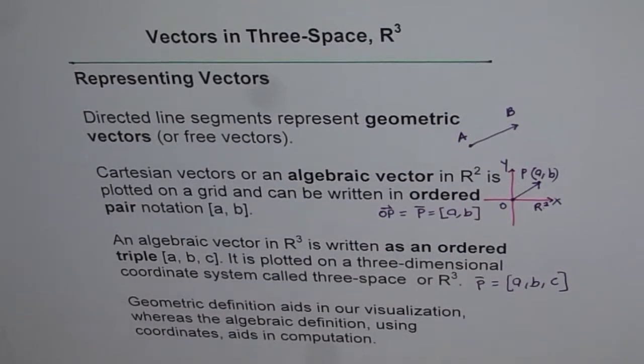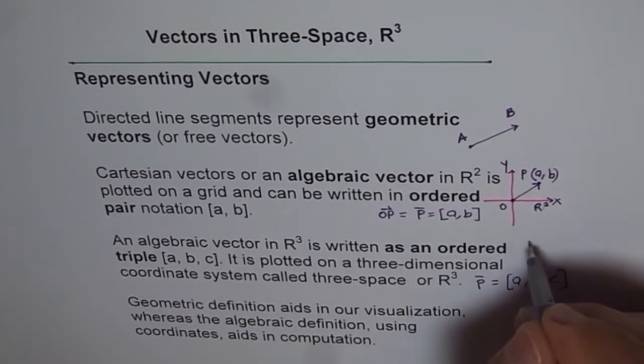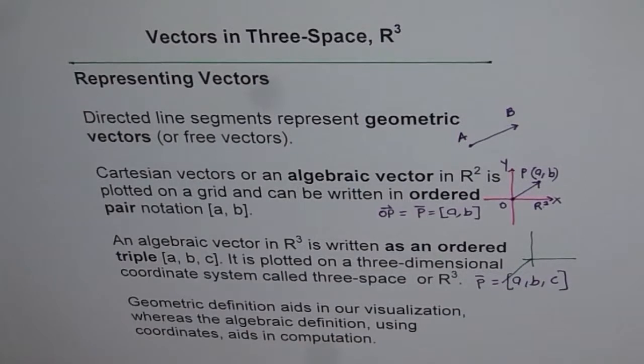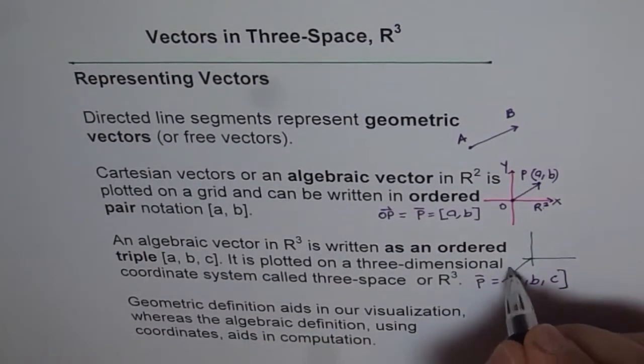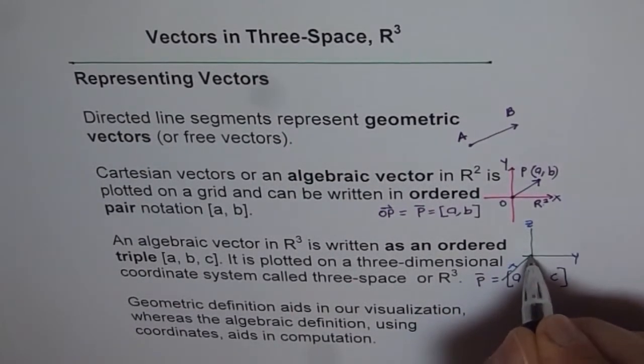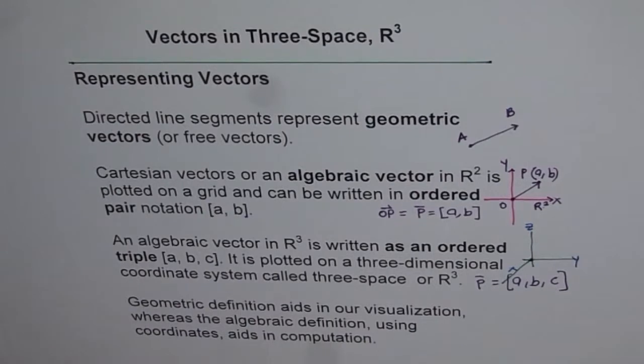Whenever we are saying R³, then you have to think about a three-dimensional space system. That is our three-dimensional space system, where we have X, Y, and Z axes as shown here with origin. All these three axes are orthogonal or at right angles to each other.